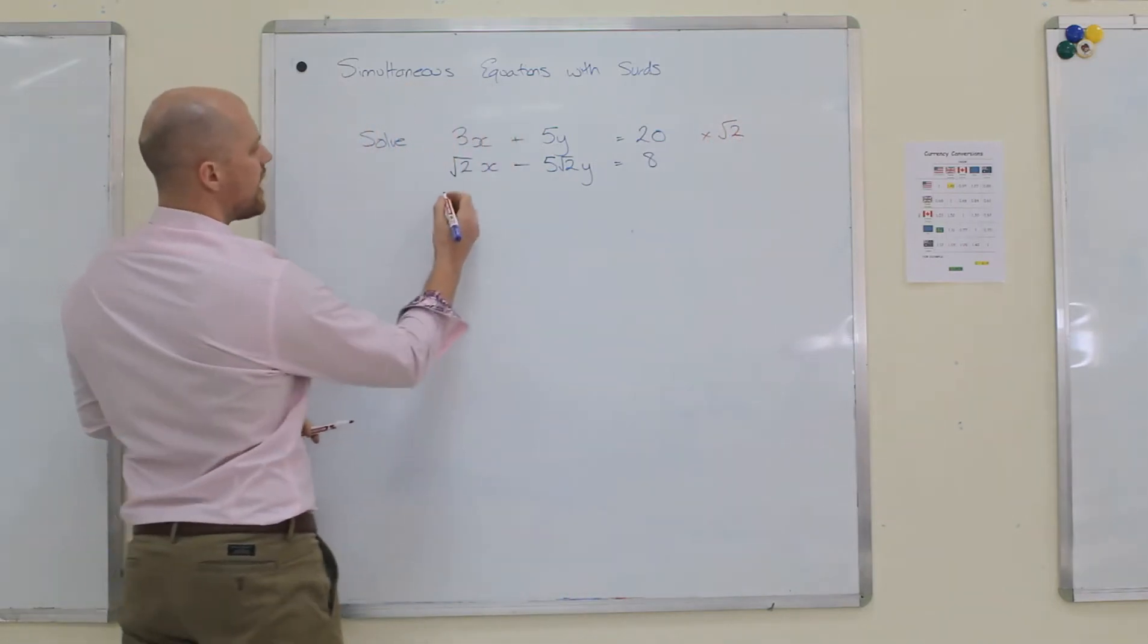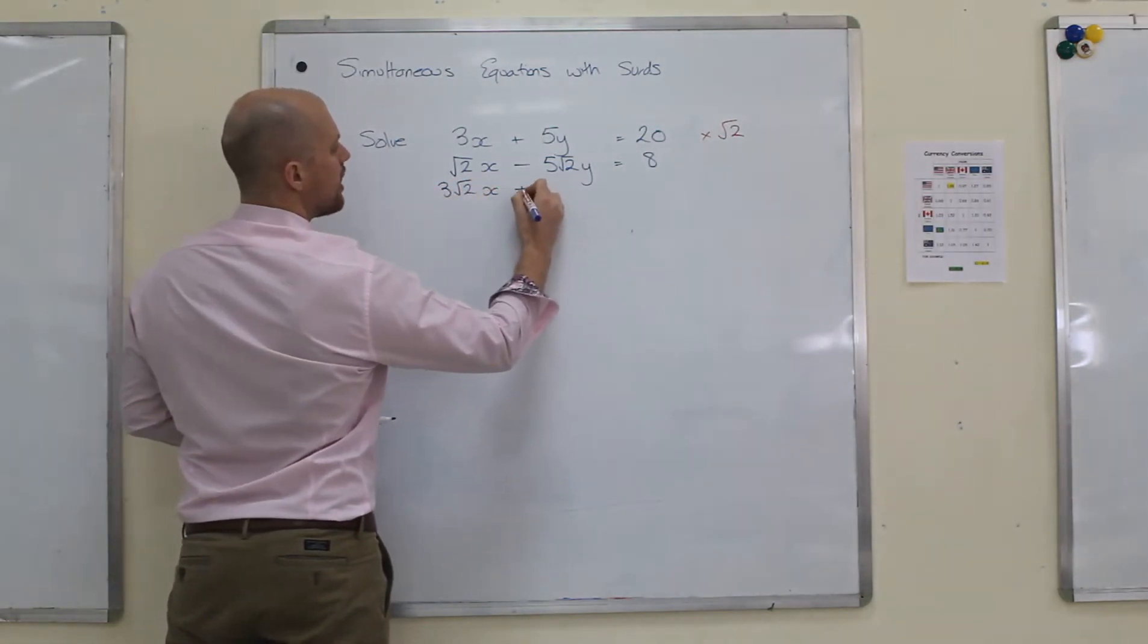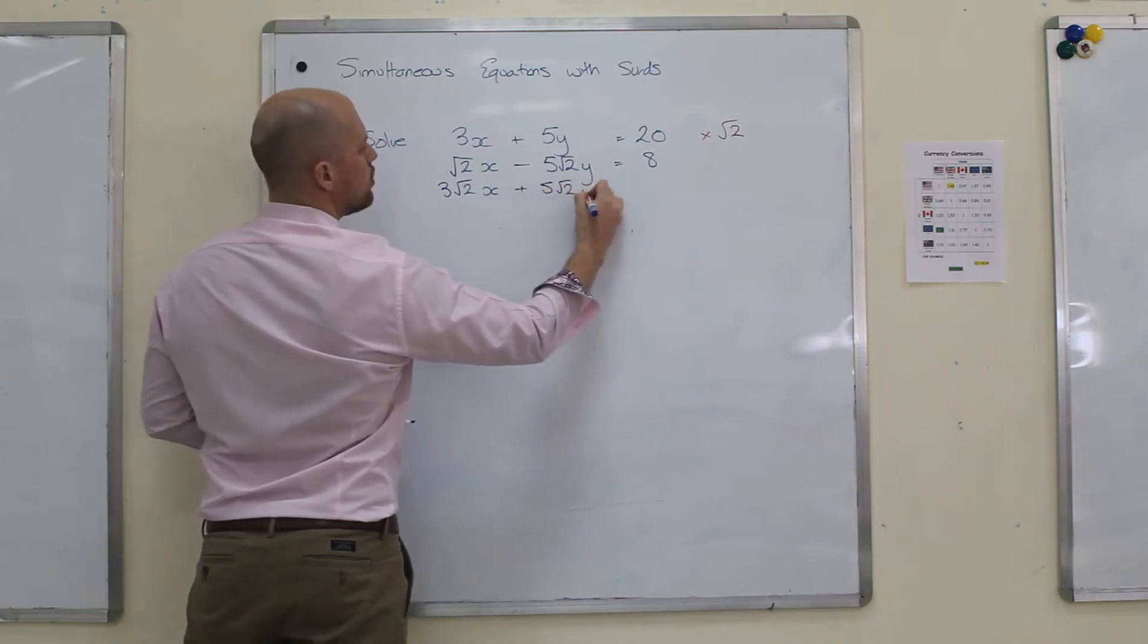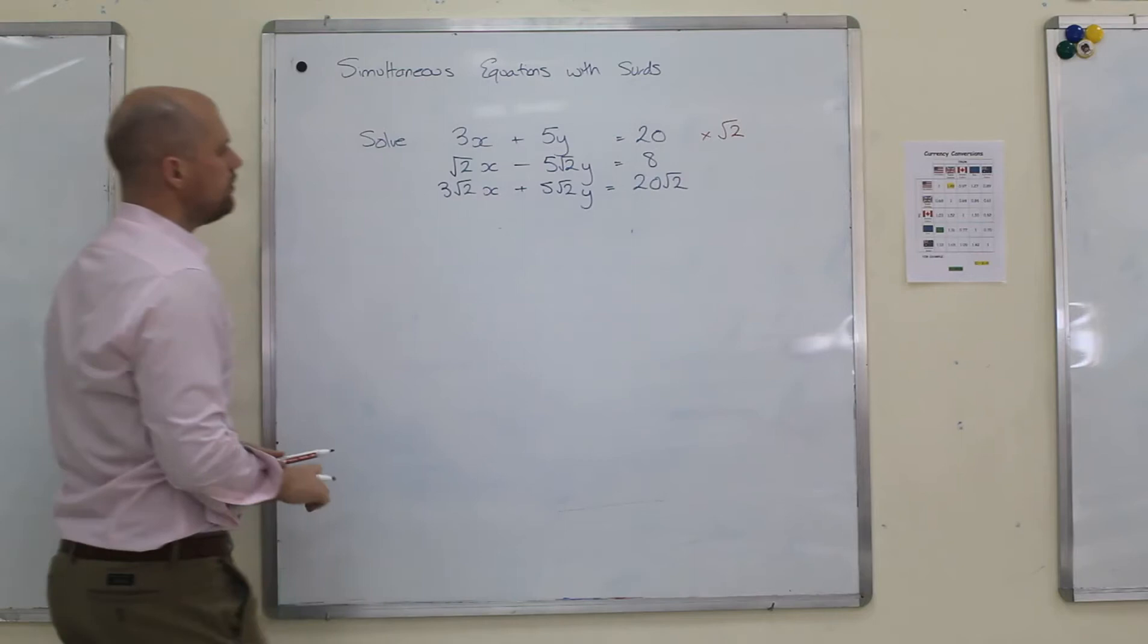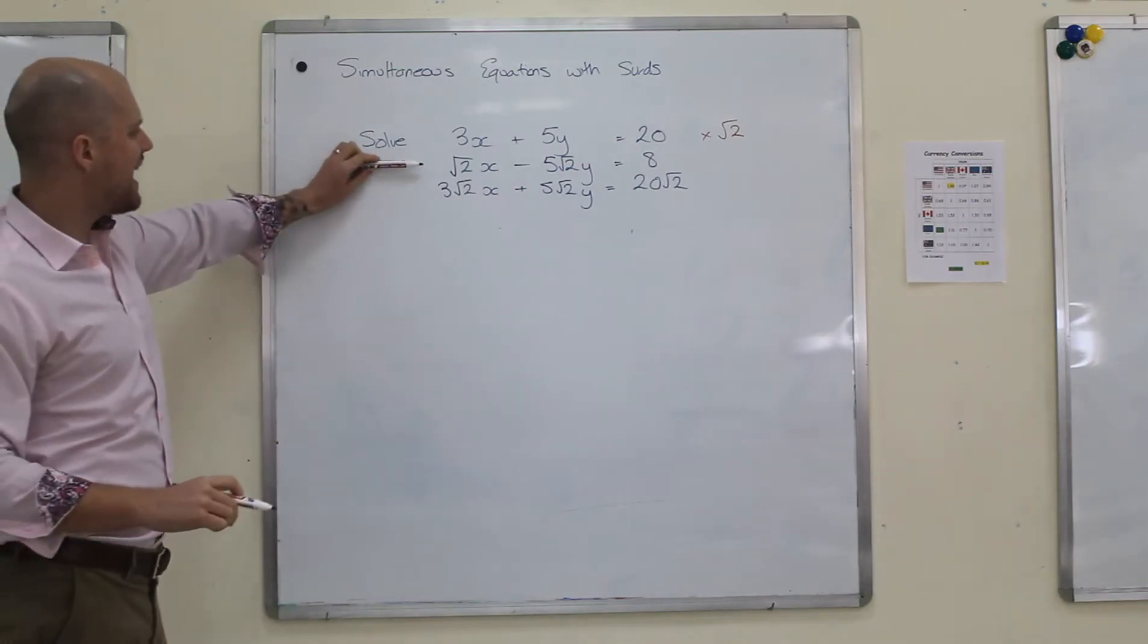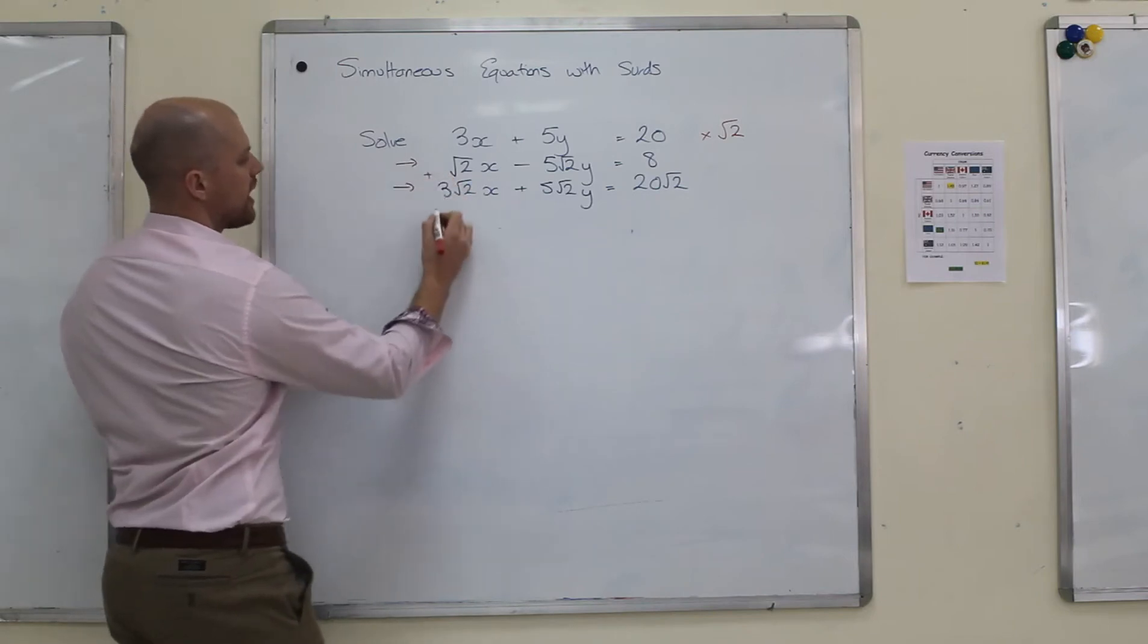So if I do that, I'm just going to put it straight underneath. I get 3 root 2x plus 5 root 2y equals 20 root 2. Now, what I'm going to do is I'm going to add these two together.